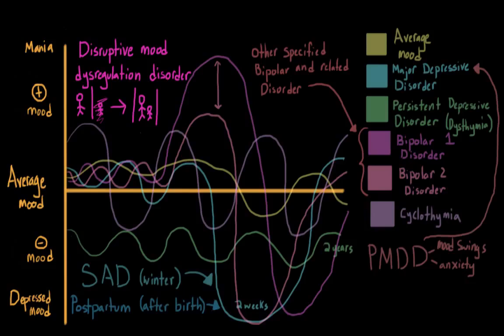Disruptive mood dysregulation disorder covers what used to be thought of as childhood bipolar disorder. So it can be used as a diagnosis for kids who are under 18 who show bipolar symptoms.